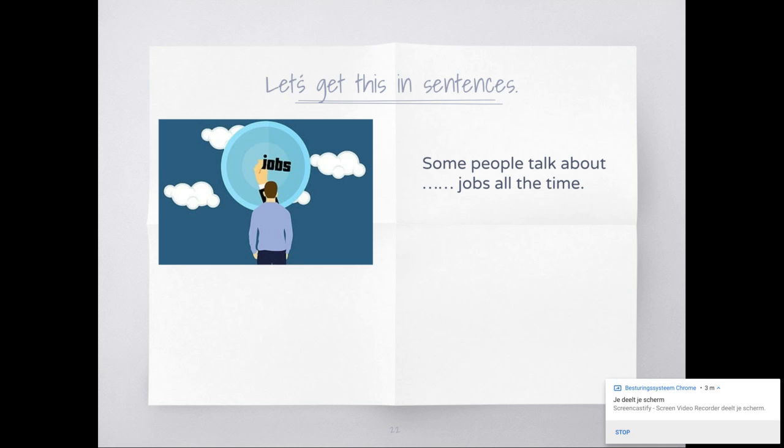Some people talk about their jobs all the time. Can you do that one? Good! Some people talk about their jobs all the time - 'their' because 'jobs' comes after it, and 'jobs' is a noun, and 'people' rhymes with 'they,' so 'their.' Next.